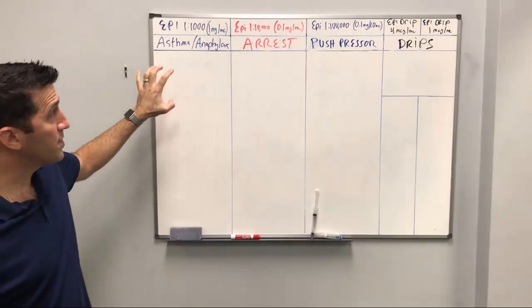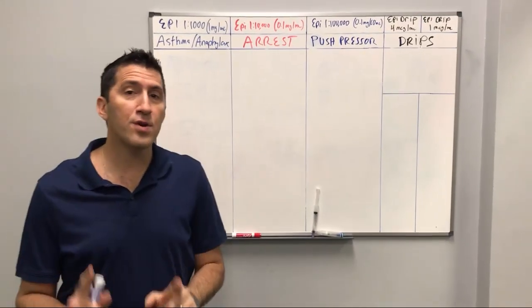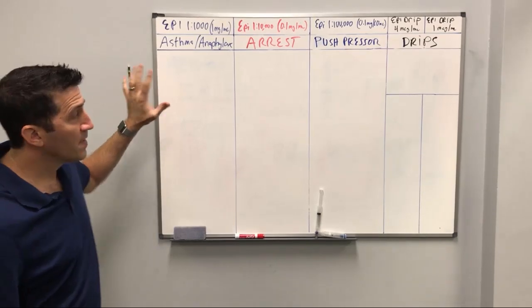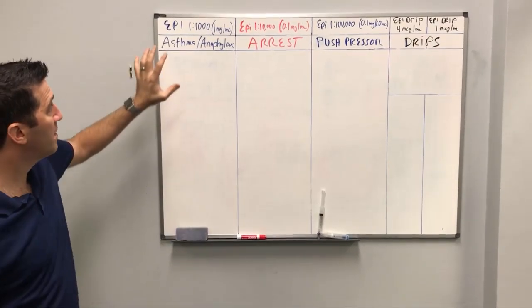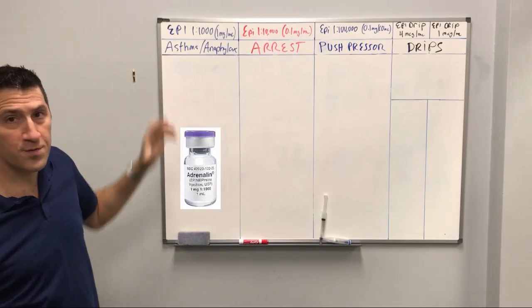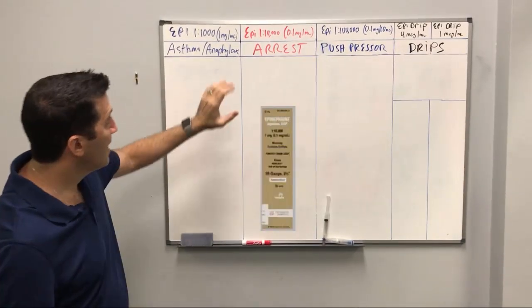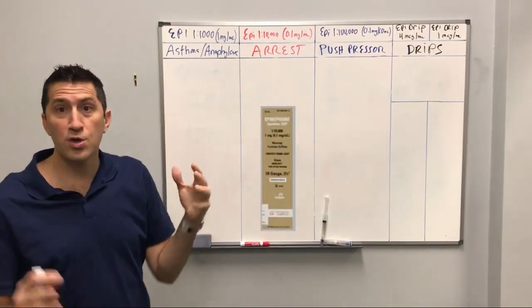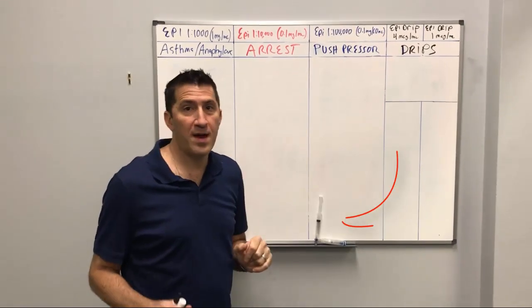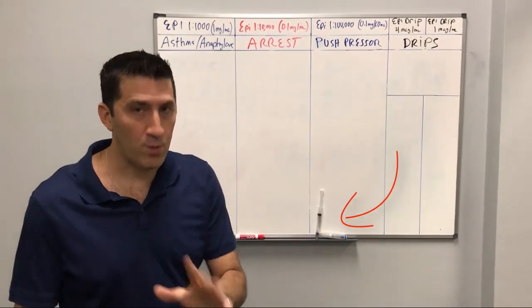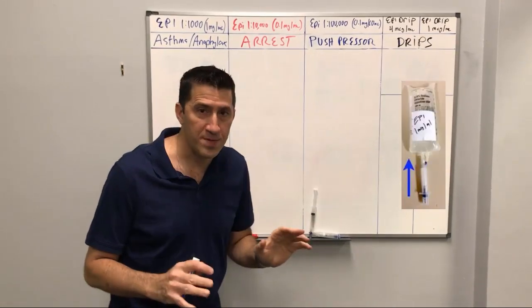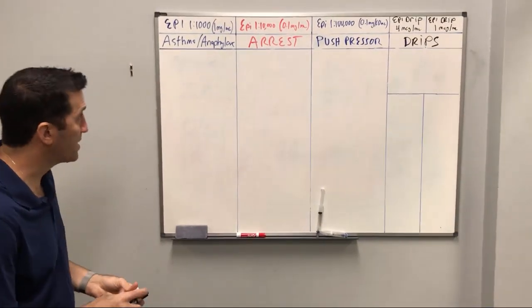I think this is very important to understand what type of epi you're going to use and why you use it. So let's start with the basic outline: epi 1 to 1,000, which we know you use for asthma and anaphylaxis; epi 1 to 10,000, which we know you use in arrest; epi 1 to 100,000, which is what we call push pressure epi — we'll get to that in a minute. And then of course you have the epi drips. Let's start with each of these one at a time.